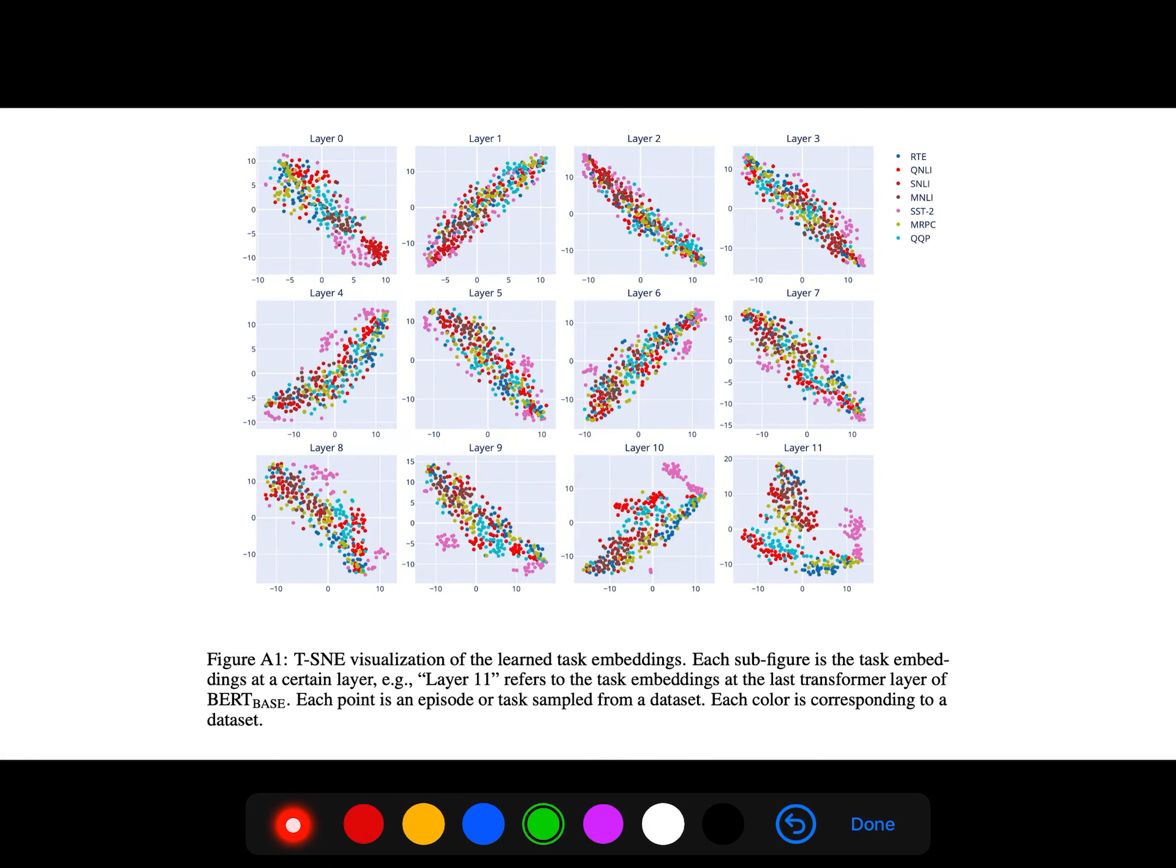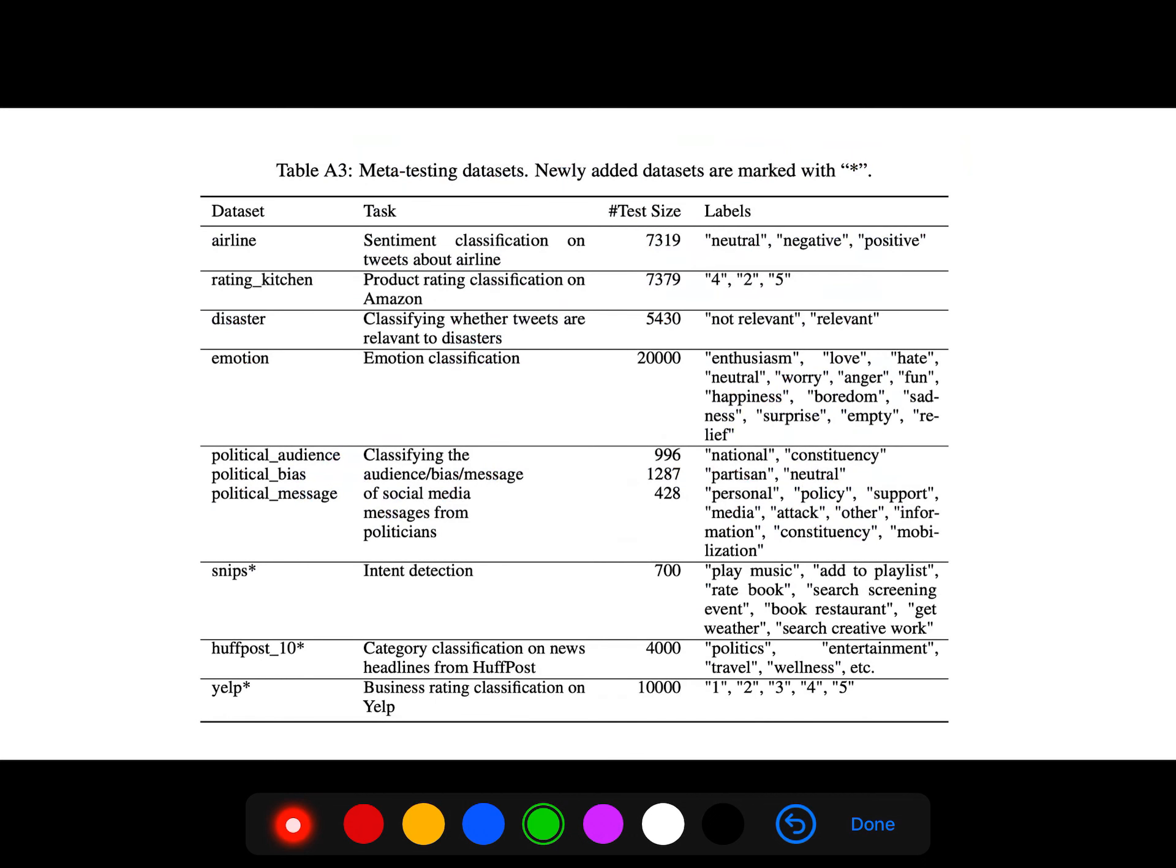This is a TSNE visualization of the learned task embeddings. Layer 11 refers to the task embedding at the last transformer layer of BERT base. Each point is an episode or task sampled from a dataset. Each color corresponds to a dataset. We have different labels for different tasks: task of sentiment classification, task of emotion classification, task of intent detection.